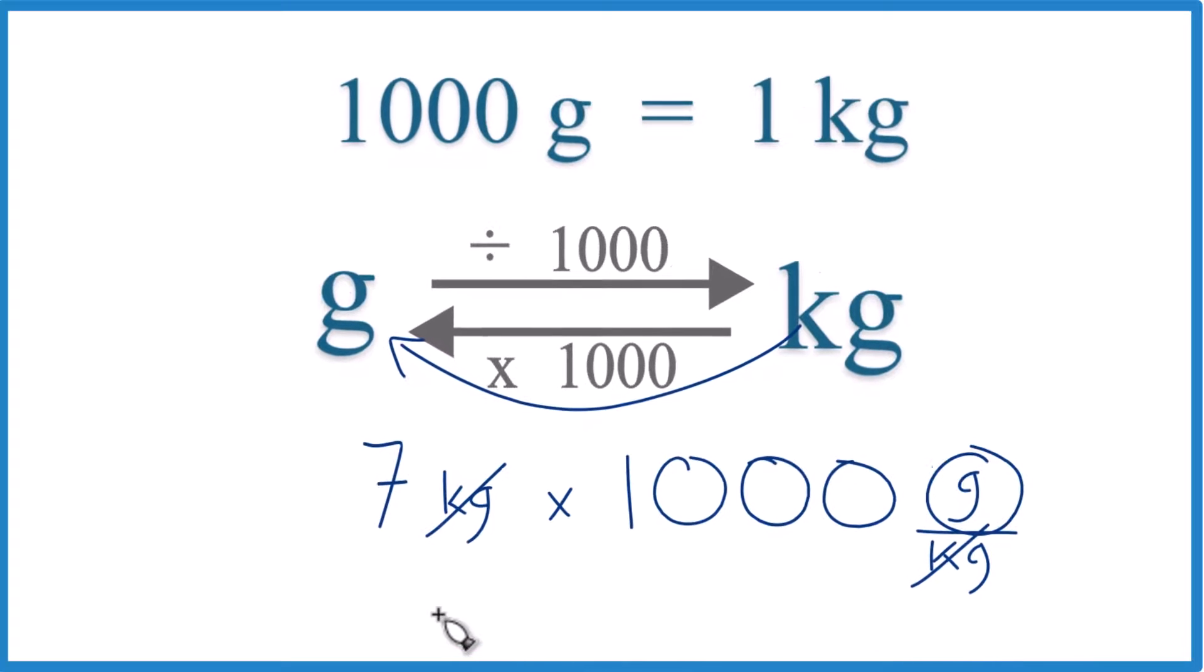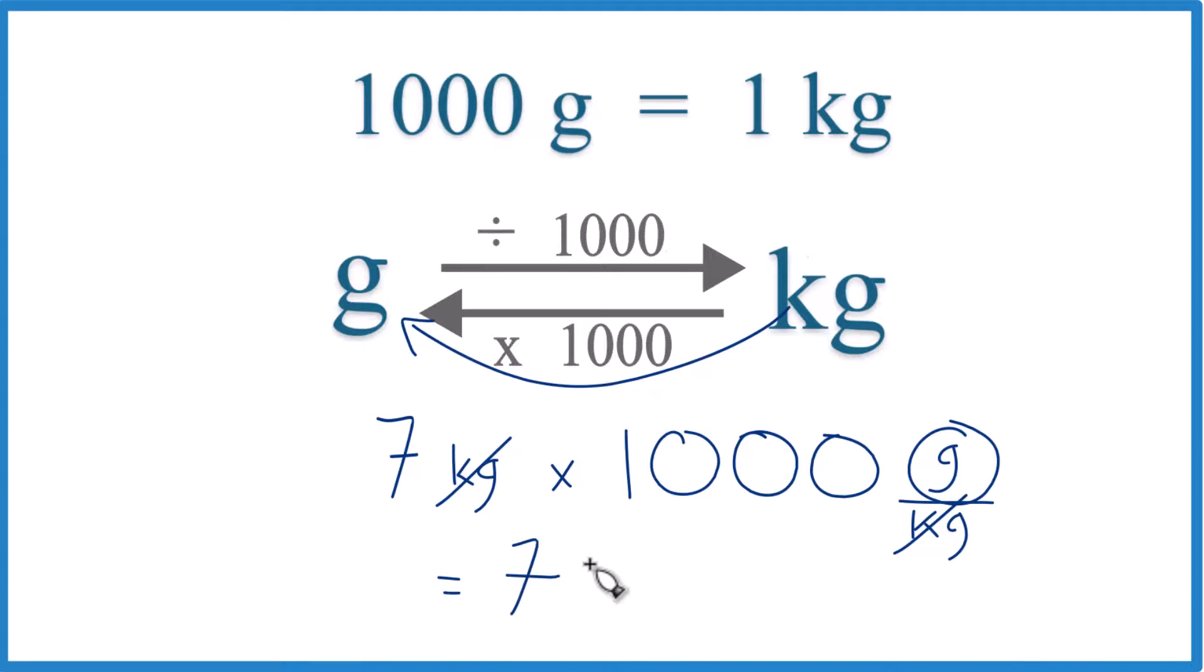So seven times 1,000 grams, that gives us 7,000 grams. So in answer to our question, seven kilograms, that equals 7,000 grams. That's Dr. B, thanks for watchin'.